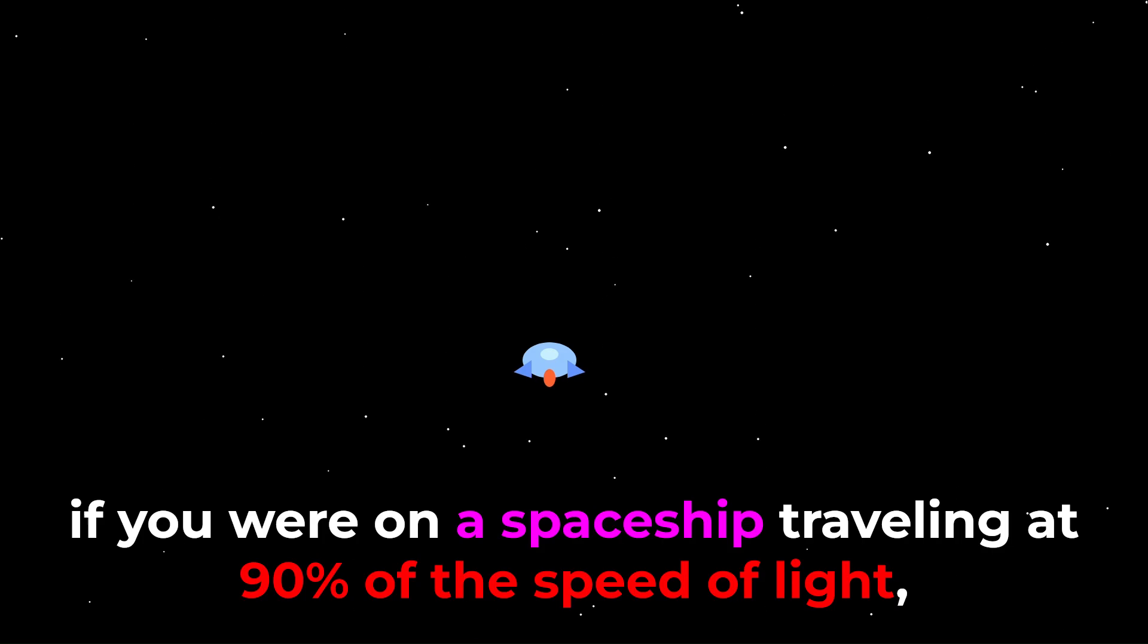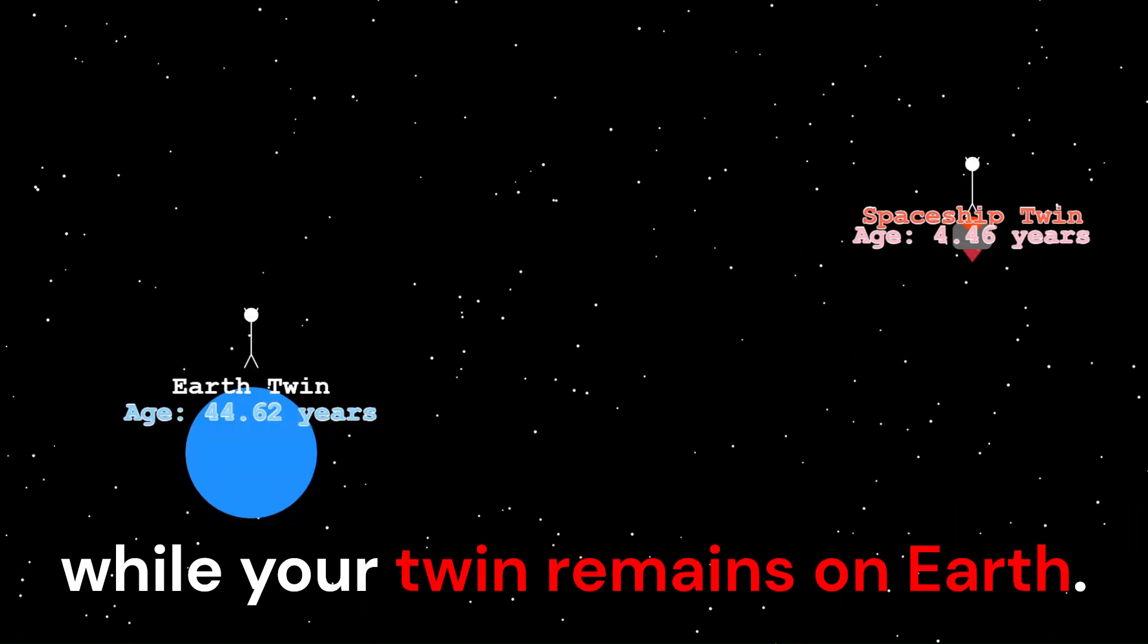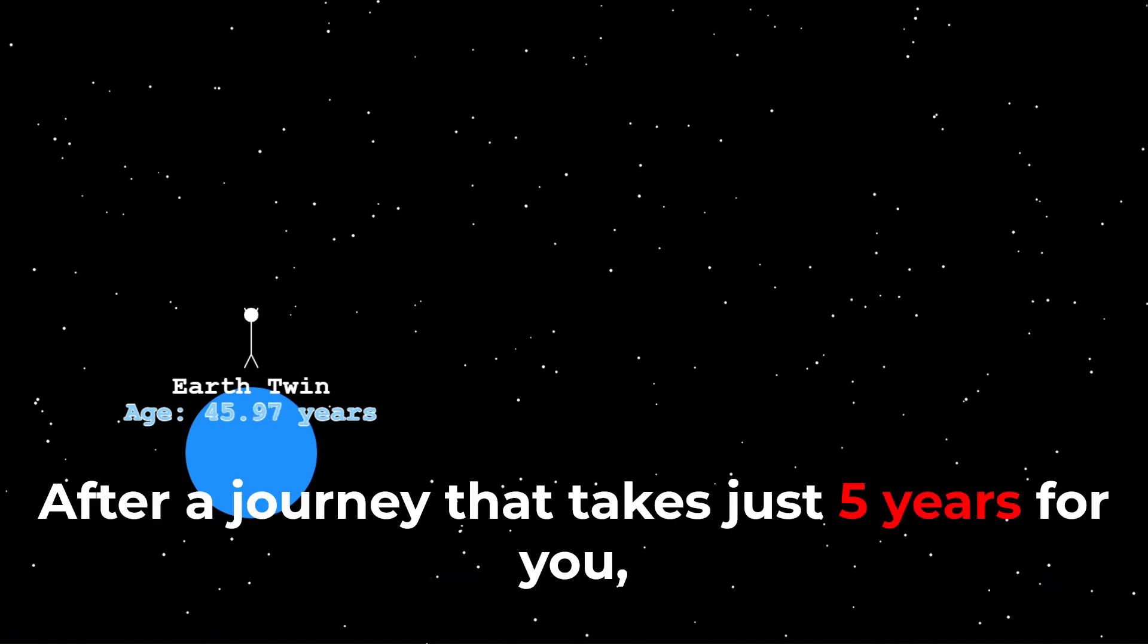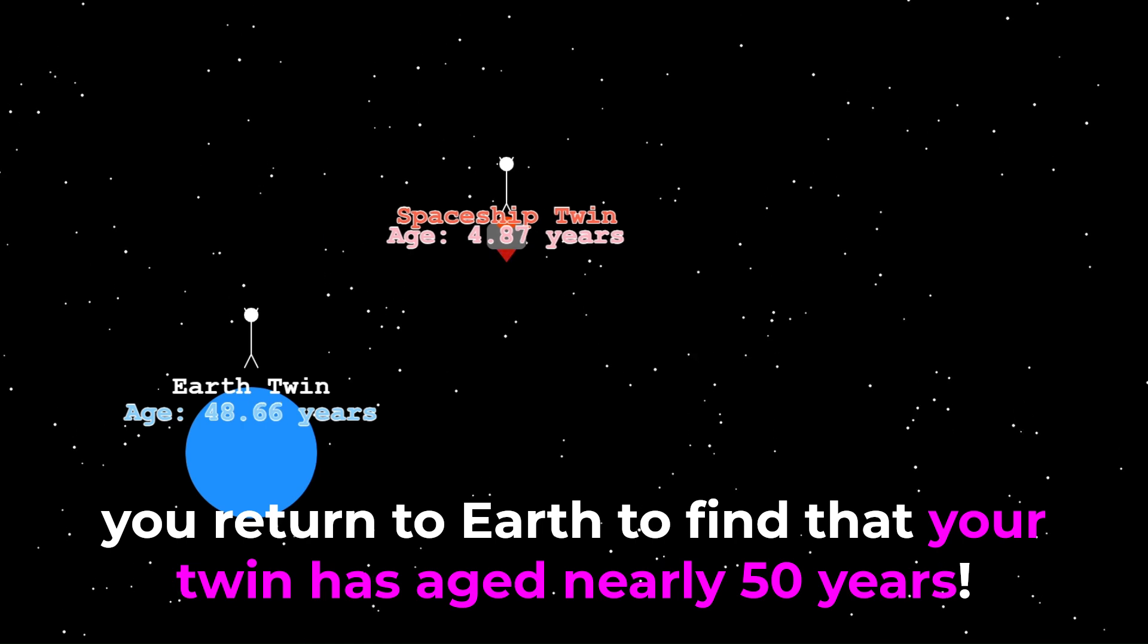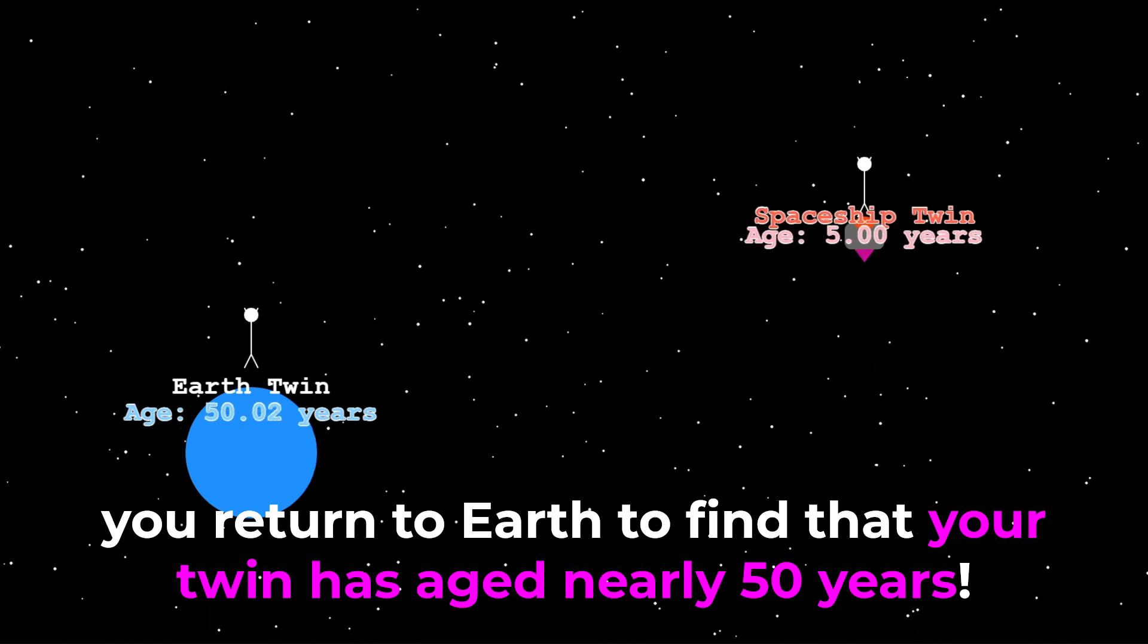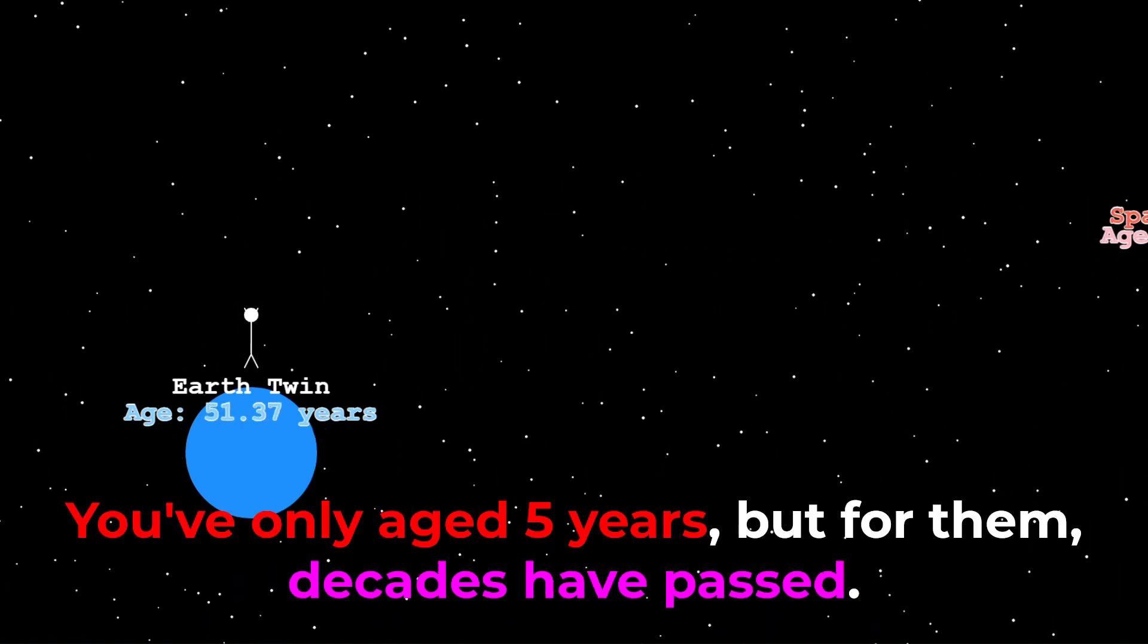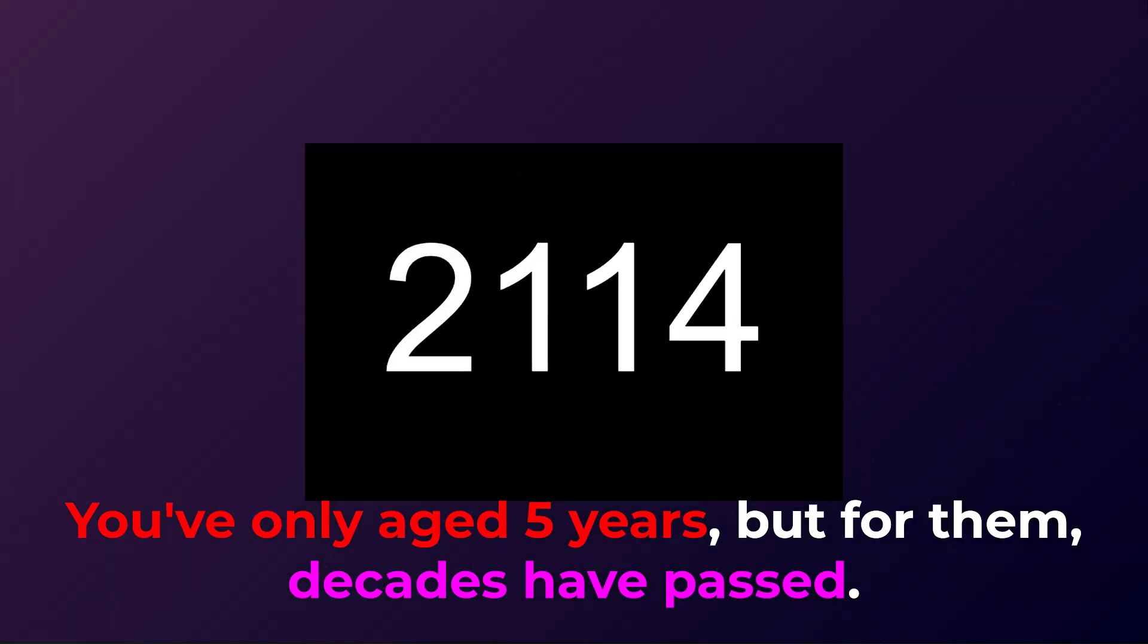For example, if you were on a spaceship traveling at 90% of the speed of light, while your twin remains on Earth. After a journey that takes just 5 years for you, you return to Earth to find that your twin has aged nearly 50 years. You've only aged 5 years, but for them, decades have passed.